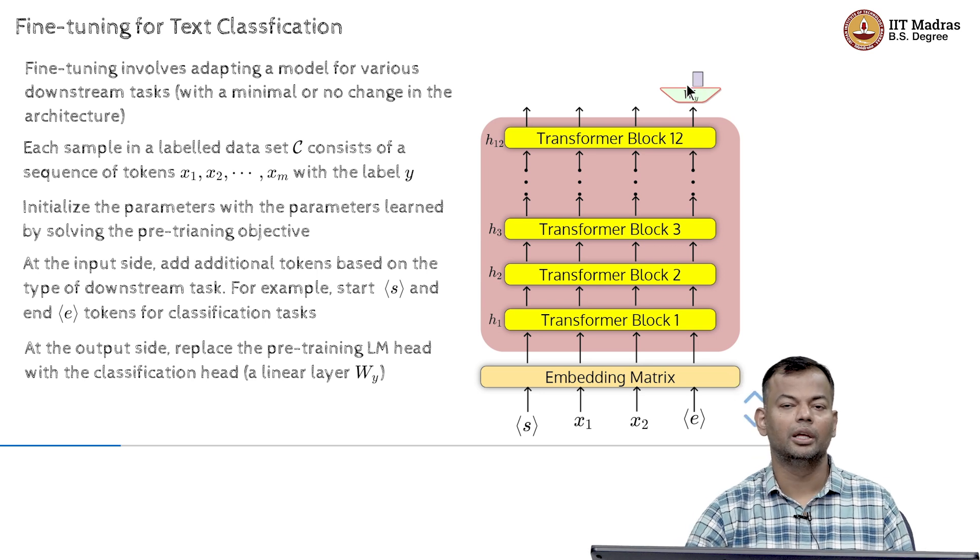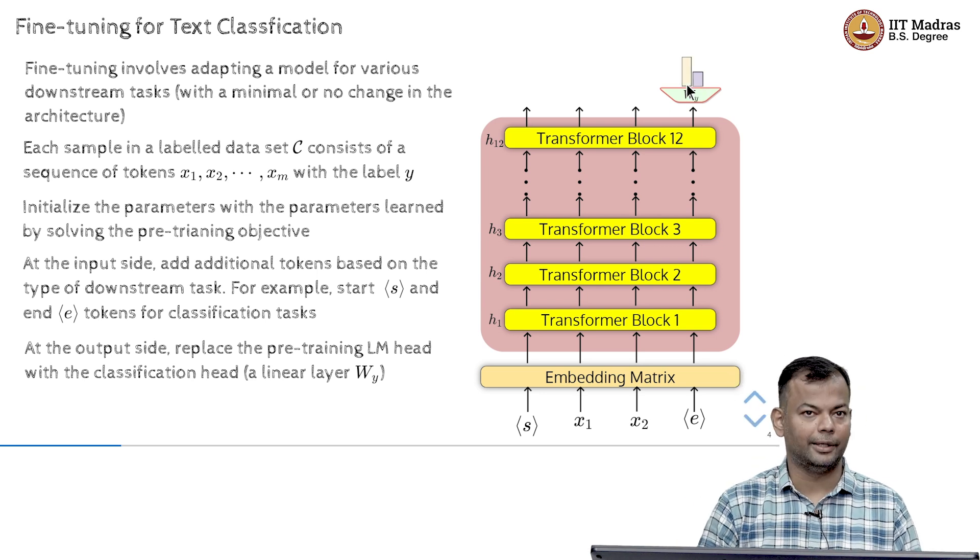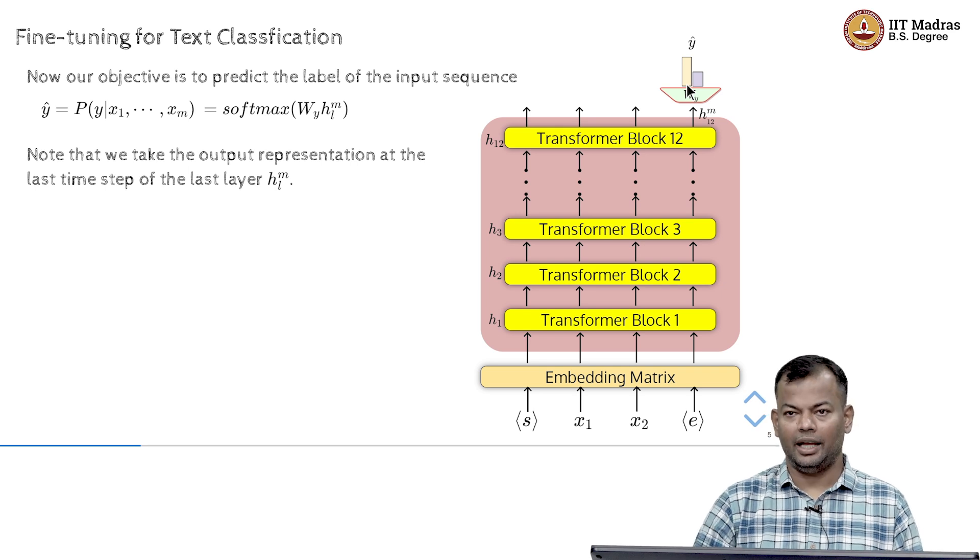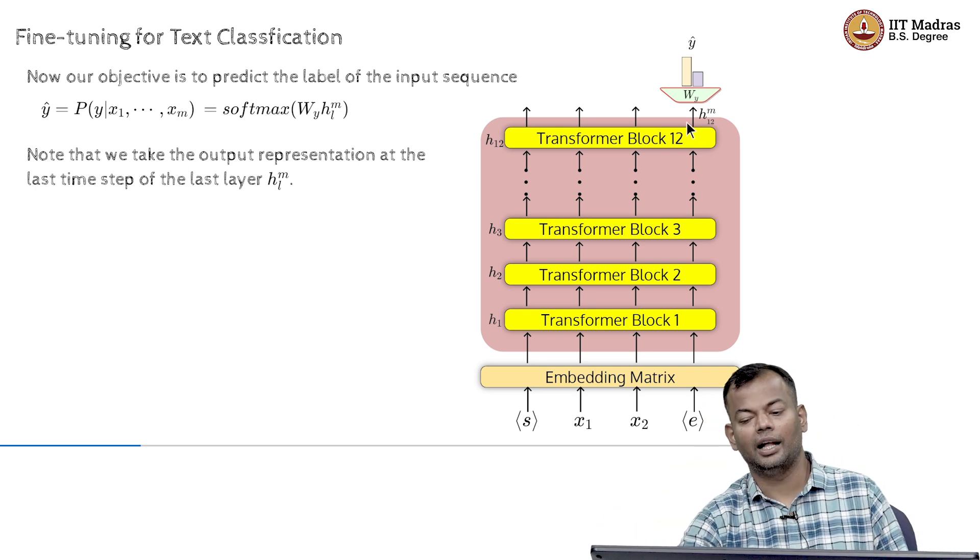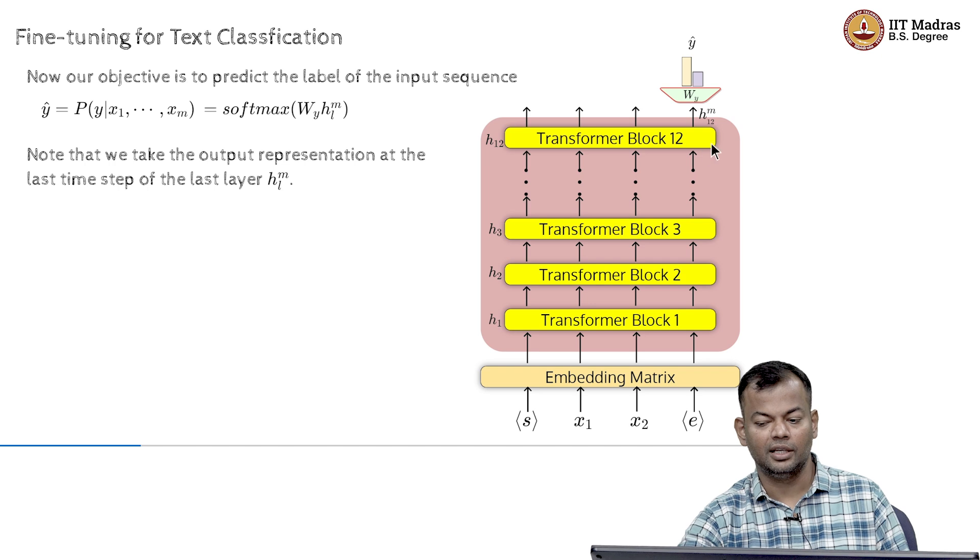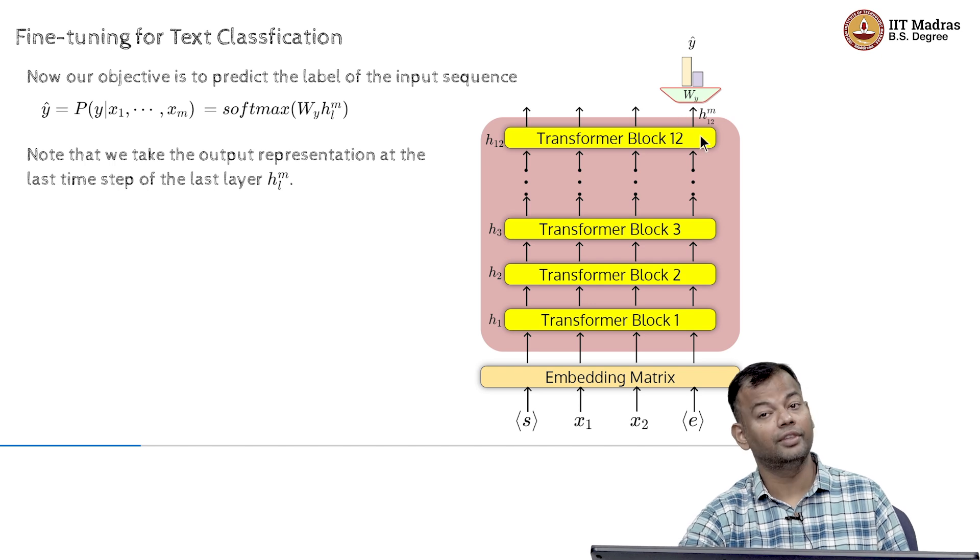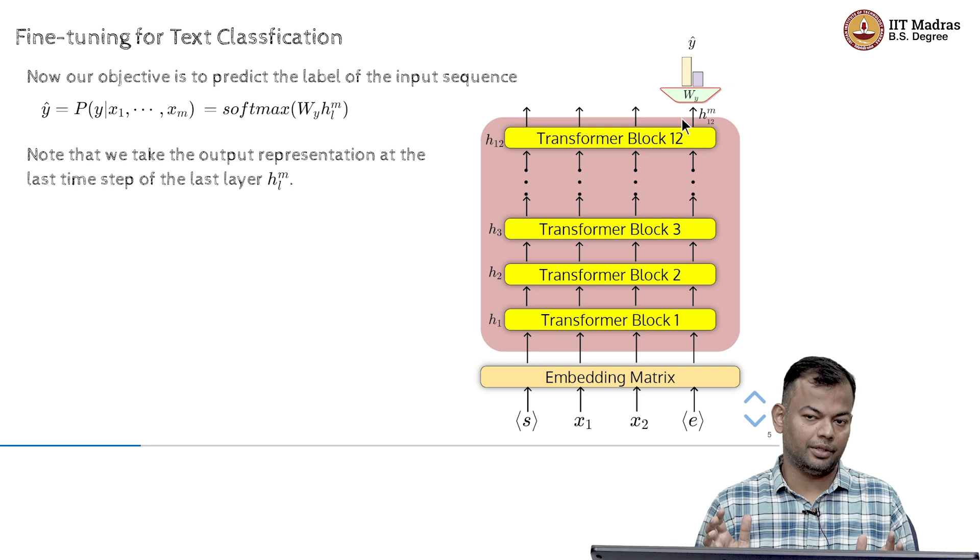So, this is what we are doing and we could take the output at the last time step. This last time step of the last layer is what I am treating as the representation for the sentence, because it is a causal language model.